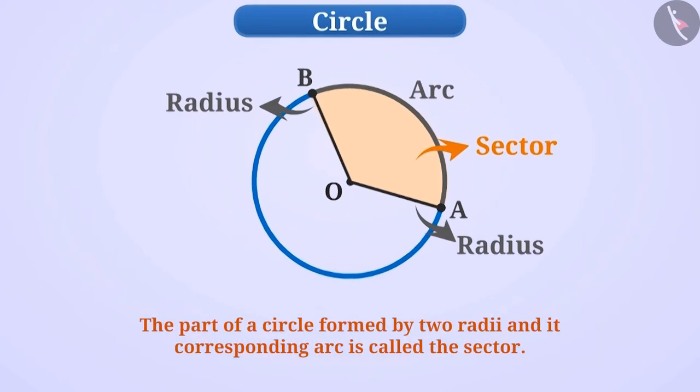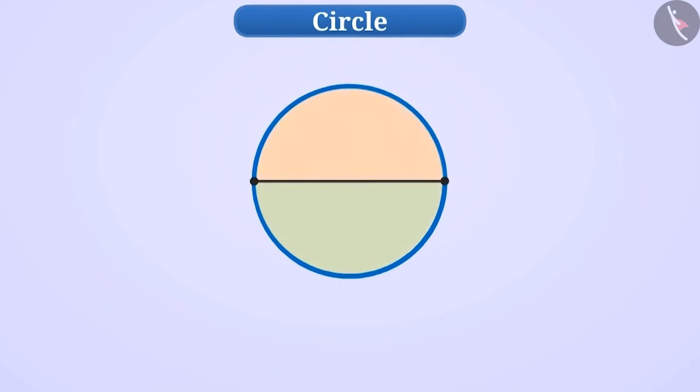In this way, the part of the circle formed by two radii and corresponding arc is called sector. If we see, diameter divides the circle into two equal parts. Each of these parts is called a semicircle.